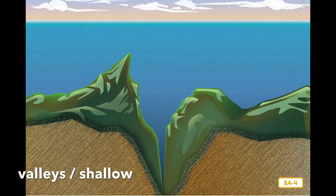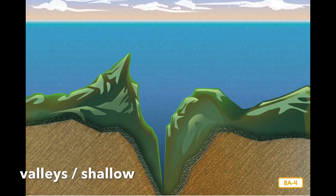The interesting thing about the ocean floor, which is the land under the ocean water, is that it isn't flat. As on land, the earth beneath the ocean waters has both mountains and valleys. Mountains are areas of land that are very high where the land peaks. Valleys are areas of the land that are low and in between two high areas, such as mountains. This makes some areas of the ocean deeper than others.